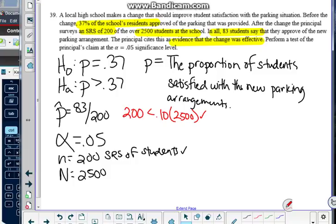Now we take a look at the large counts condition. N times p, 200 times 83 over 200 is 83. So we know that's greater than 10.